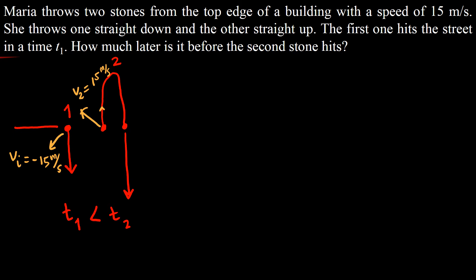Let us analyze further the motion of the second stone. It was released with a velocity of 15 meters per second upward. As it reaches maximum height, the velocity of this stone would be equal to 0 meters per second — when something is thrown upward, the velocity at the maximum height is 0. Then it starts to go down, and as it reaches the point where it was released, the velocity of the stone would be equal to negative 15 meters per second, negative because it is now going down.